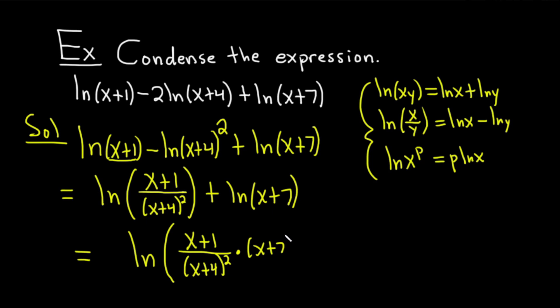And honestly, you could probably just leave it like this, but I'm going to go ahead and just write everything a little bit cleaner. This is the natural log of, I'm going to put the x plus 7 upstairs with the x plus 1. So it's x plus 1, x plus 7 over x plus 4 squared.